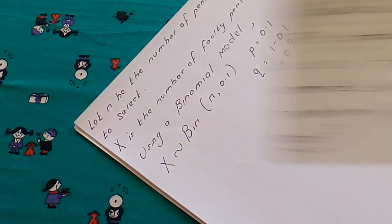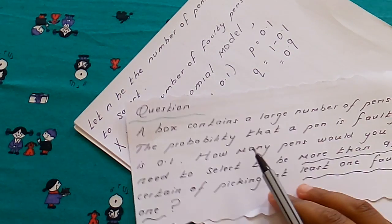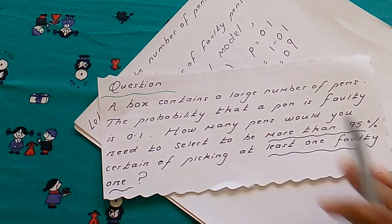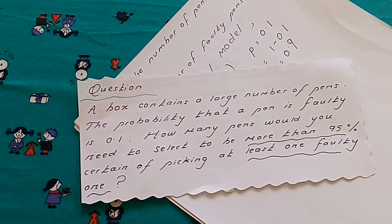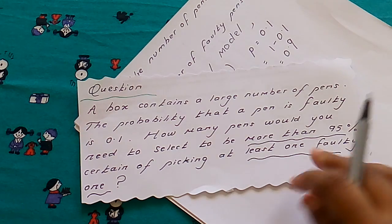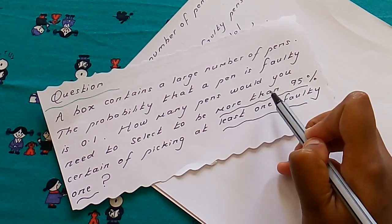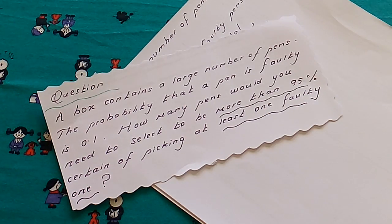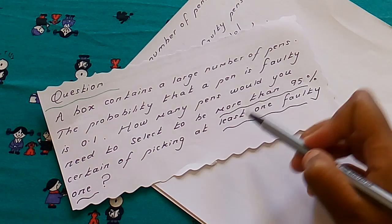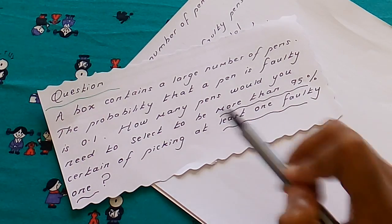Now in the question you will see that it says how many pens would you need to select to be more than 95% certain of picking at least 1 faulty. Now the keywords are more than 95% and at least 1 faulty.